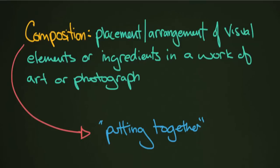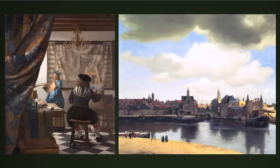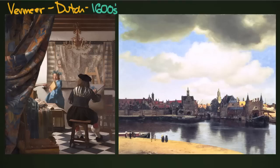Now let's take a look at one of the fathers of modern composition in the Western tradition. His name is Vermeer — a very famous Dutch painter who lived in the 1600s, the 17th century. Vermeer was really famous for his compositions. He has many more famous images than even this one shown here. He was known for portraying people and scenes very clearly and in a well-structured way that followed many of the rules you would now follow as a photographer.